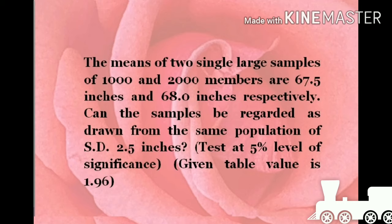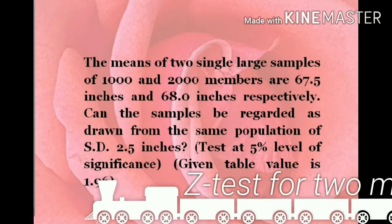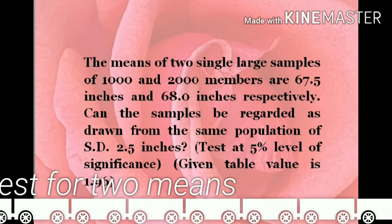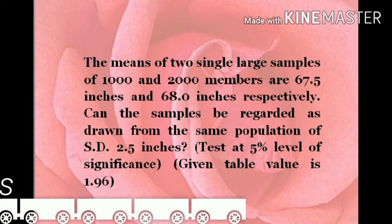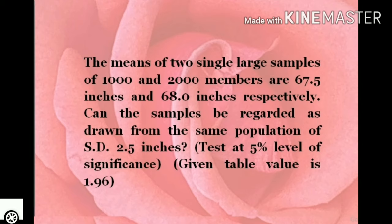The means of two single large samples of 1000 and 2000 members are 67.5 inches and 68.0 inches respectively. Can the samples be regarded as drawn from the same population of standard deviation 2.5 inches? Test at 5% level of significance.